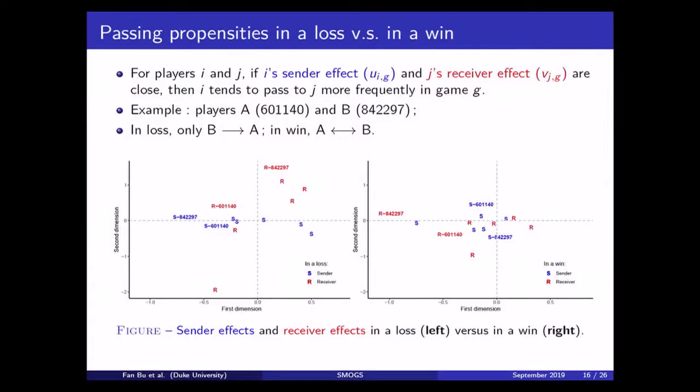However, in this victory, we see that A's blue point is close to B's red point and vice versa. So, in this victory, their passing behavior is two-sided and is more balanced. And in general, this kind of difference is true for almost all the player pairs on the team. And I'm about to show you that.